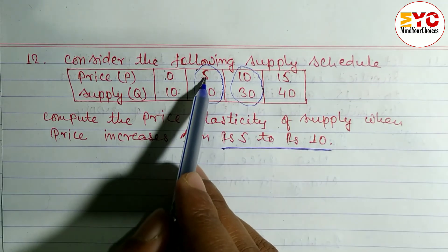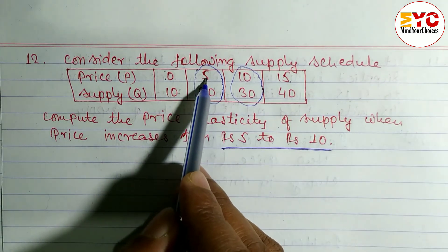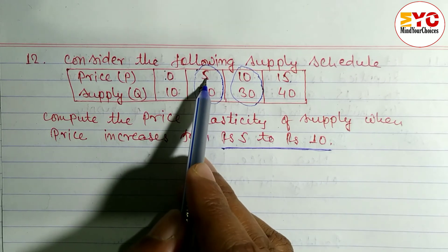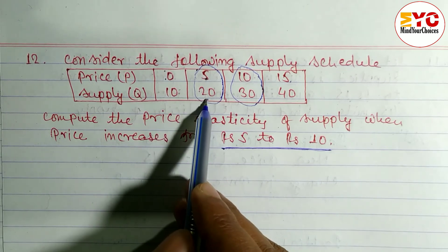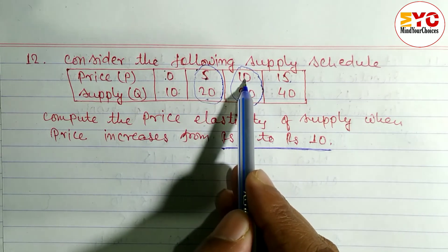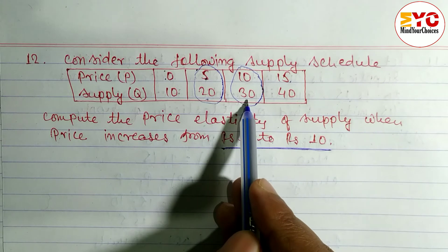If price is Rs 5, then quantity supplied is 20. It means initial price is 5 and initial supply is 20. When the price is Rs 10, then supply is 30 units. It means new price is 10 and new supply is 30.